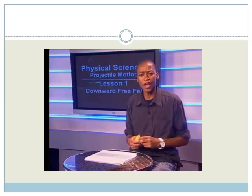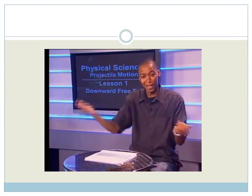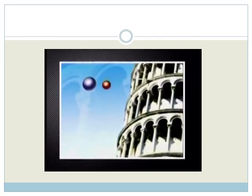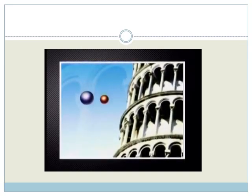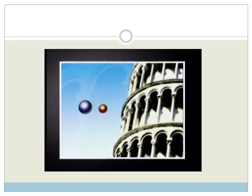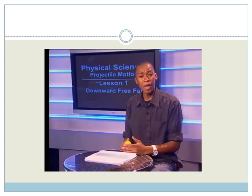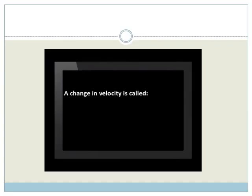How does this projectile move in a downward freefall? Let's look at velocity. Imagine we let the projectile fall freely from the top of a very high building, and we measure its velocity at the end of each second of its fall. Note that the projectile's velocity is downwards for the whole motion. As time passes, the projectile's velocity changes. A change in velocity is called acceleration. Projectiles accelerate as they fall.